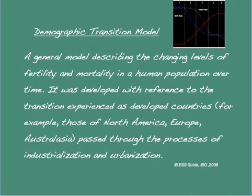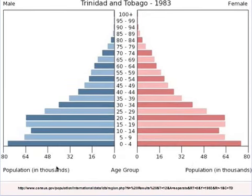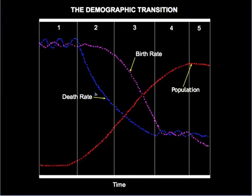Another way of studying the demographic transition is to use the age-sex pyramid. Many LEDCs have been undergoing transformation and moving through the various stages of the demographic transition. One such country is the tiny Caribbean nation of Trinidad and Tobago. Here we see its age-sex pyramid for the year 1983, which is typical of a country in stage two of the demographic transition, with high birth rates, falling death rates, and an increasing population.